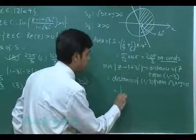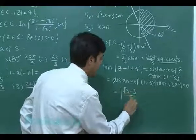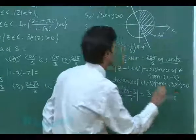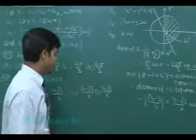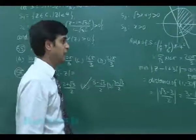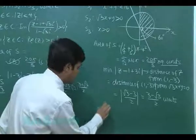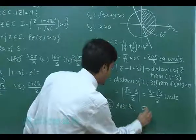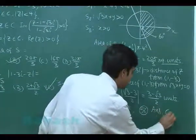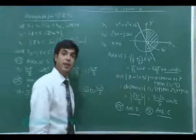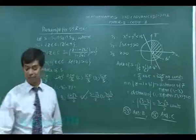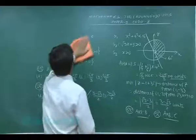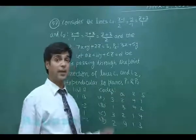The minimum distance is the perpendicular distance from (1, −3) to the line √3·x + y = 0, which equals |√3·(1) + (−3)| / √(3 + 1) = |√3 − 3| / 2 = (3 − √3)/2 units. So the answer to question 56 is (3 − √3)/2, which is option C. Question 55 answer is B, question 56 answer is C.